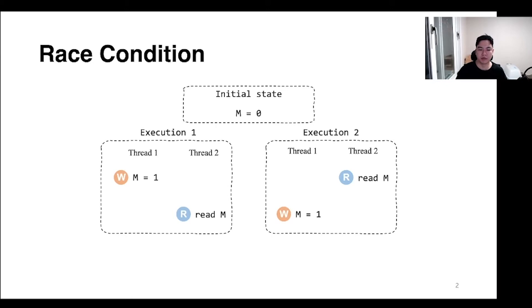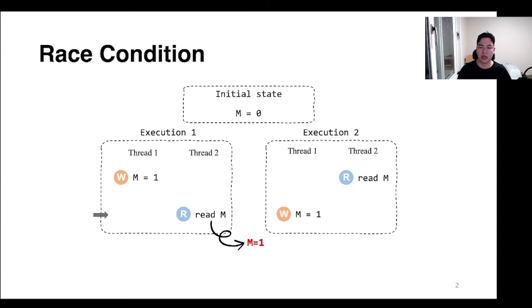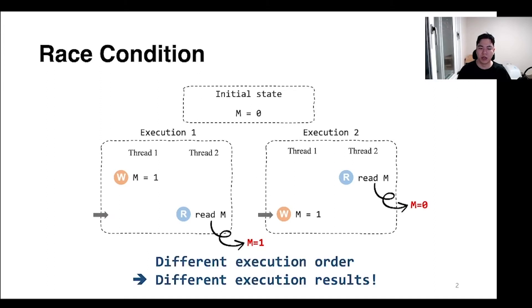Let's take an example. Suppose the initial state of memory M is 0, and there are two instructions: to write 1 to memory M and to read from memory M. The order in which these instructions are executed will change the result of the read M instruction. If the write instruction executes first and then the read instruction executes, the read value will be 0. These two instructions are called a race instruction pair.